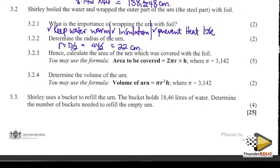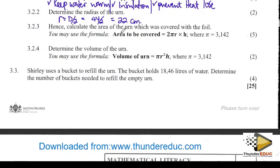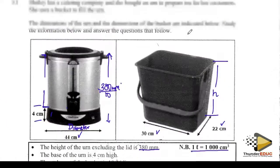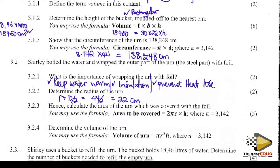Calculate the area of the urn covered with foil. We are looking at this area — from the top down to the base of the silver section. We are not looking at the base. The formula given is 2πr × h. The height h = 38 cm minus 4 cm for the base = 34 cm. So: area = 2 × 3.142 × 22 × 34.